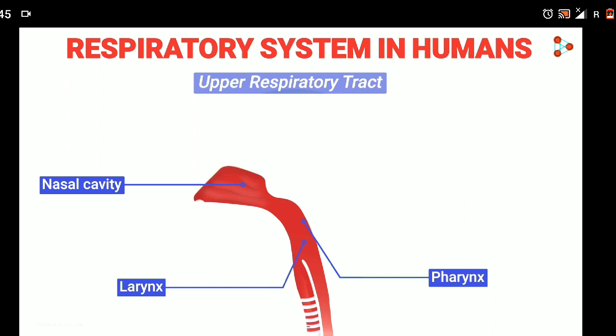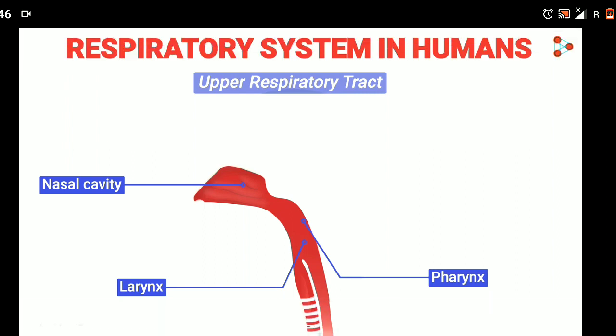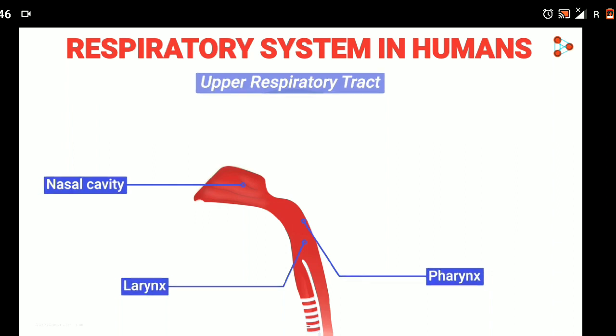The nasal cavity, pharynx, and larynx make up the upper respiratory tract. Air enters the body from the two nostrils of our nose. Nostrils are also known as nares. The nostril is lined by hair and mucus which filters the air, which may contain dust particles. The air enters into the nasal cavity, which brings the air to body temperature by warming it up.